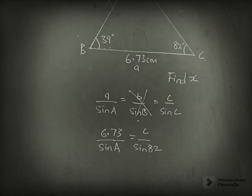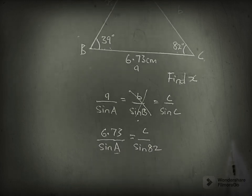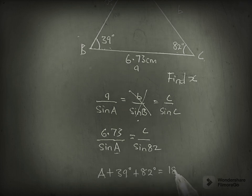Now, let's find angle A. A plus 39 plus 82 equals 180.